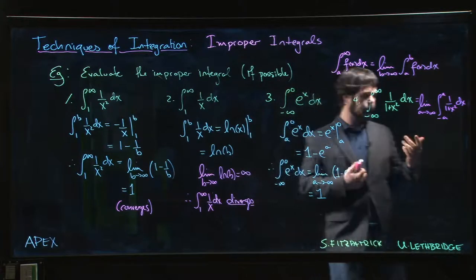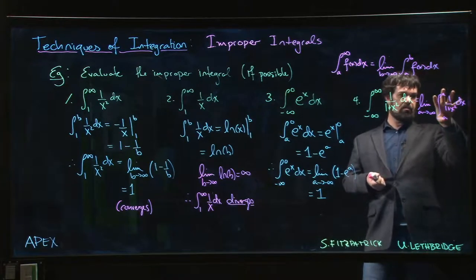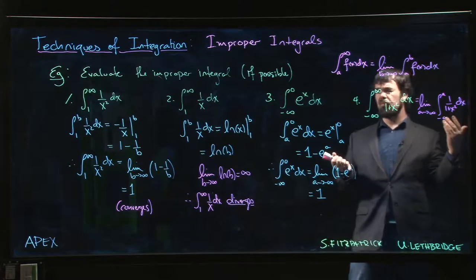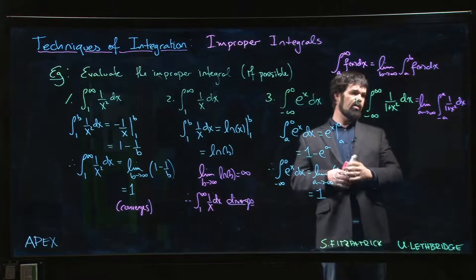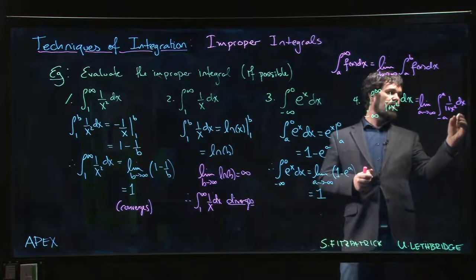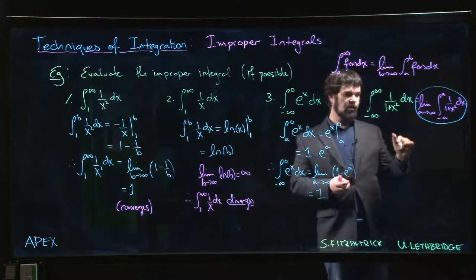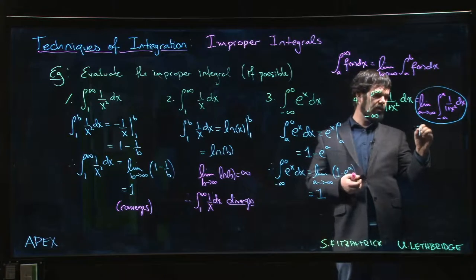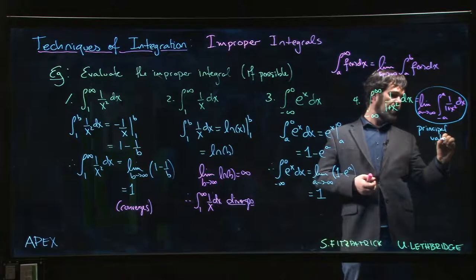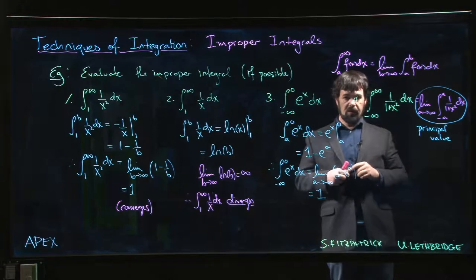Using symmetric limits can cause problems — if you had an odd function, that integral might just be zero, and you'd take the limit of zero and get an answer, but maybe that was not the right answer. The symmetric approach does have a use and a meaning — it's sometimes known as principal value. Principal value can exist for an improper integral even when the improper integral itself does not exist.